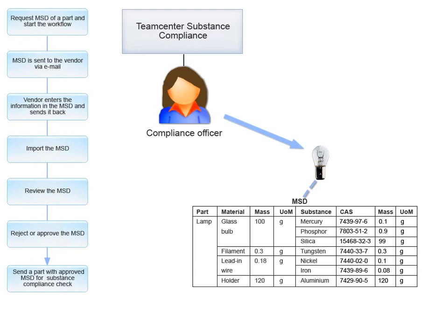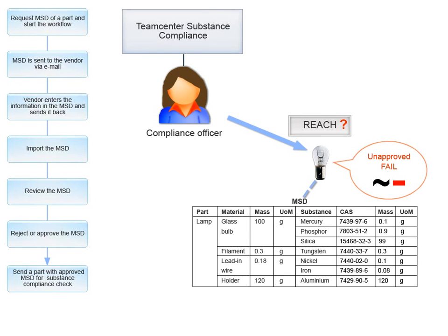You start a Substance Compliance Check to verify if the lamp conforms to the REACH regulation. The results show the status of the lamp as unapproved fail. This is because, as per REACH, nickel is a restricted substance.